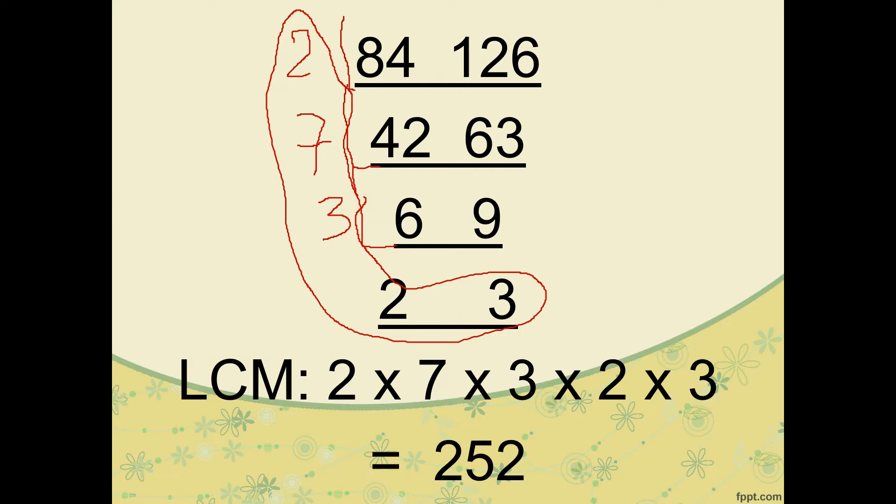If you're wondering why we always use prime numbers, always using 2 or 3 at the start, it's because it makes it easier to reduce or make the numbers smaller.